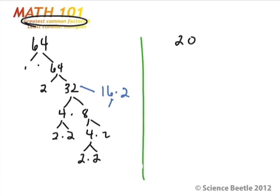Now we further reduce the 16 to 4 times 4, and then the 4 is reduced down to 2 times 2, and 2 times 2. Okay? So that's going to be the complete factor tree on the left-hand side.